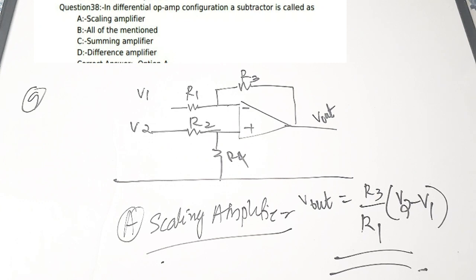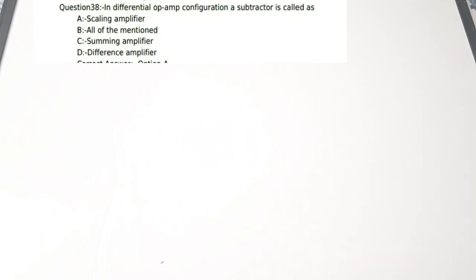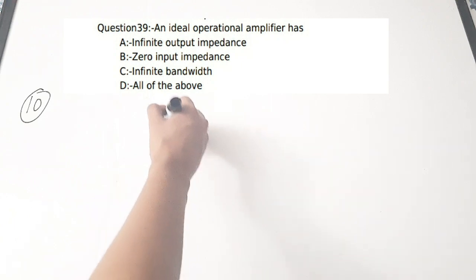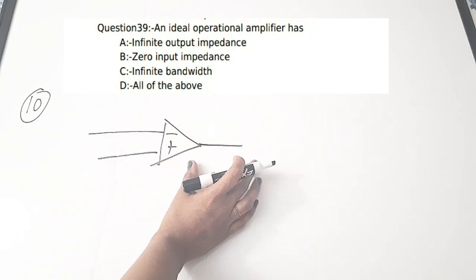The subtractor configuration is therefore called a scaling amplifier. Tenth question: an ideal operational amplifier has — A) infinite output impedance, B) zero input impedance, C) infinite bandwidth, D) all of the above. Not all options are correct — we need to examine each.